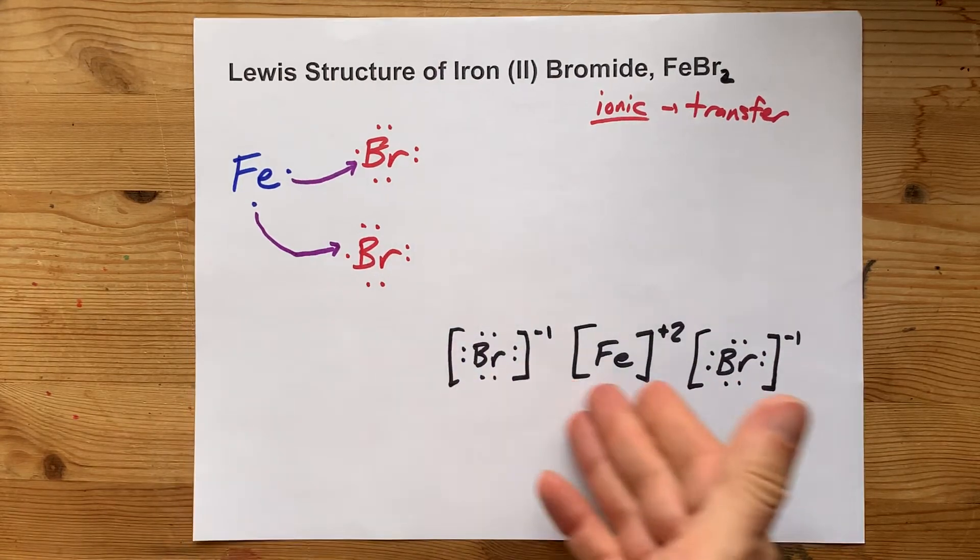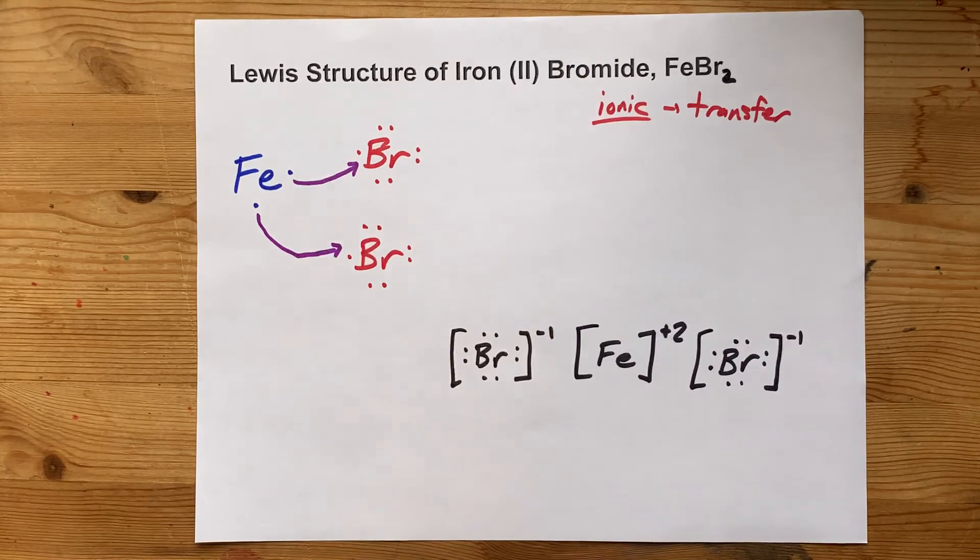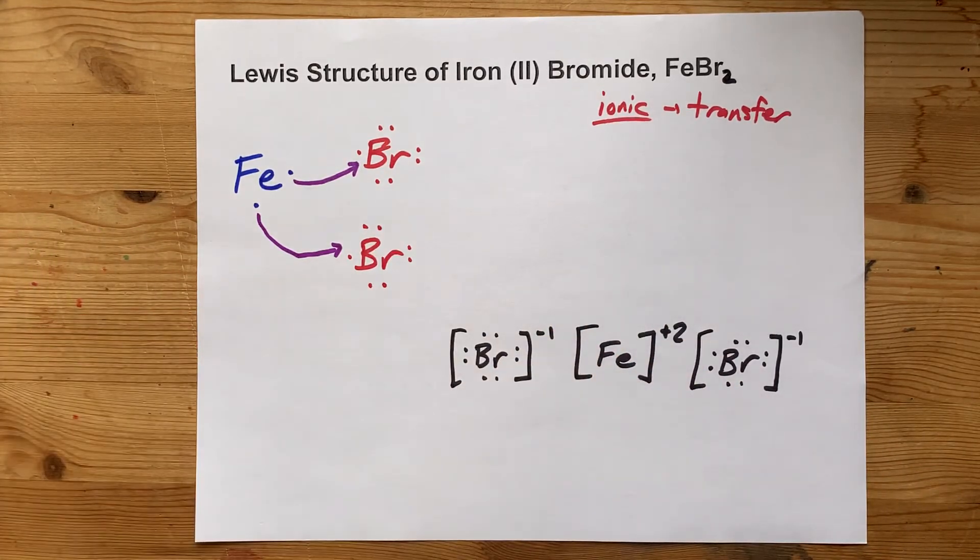So there's your completed Lewis structure for iron (II) bromide. Thank you for being with me, and best of luck.